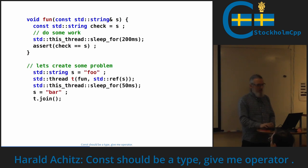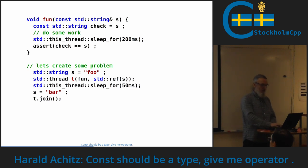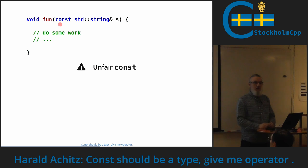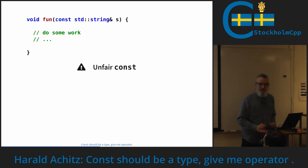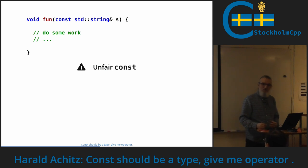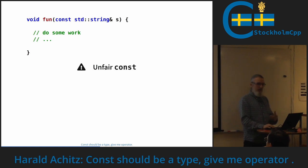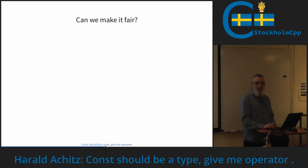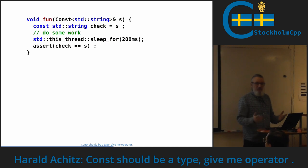I can create a problem very easily — this will not work. This code is guaranteed to fail because this const we have here as the function argument is what I call an 'unfair const'. It says: 'hey function, you guarantee me you don't change it, right? I guarantee you nothing.' And depending on which side of the contract you are, that's okay — but when we talk about strong types and so on, we would like to have something different.